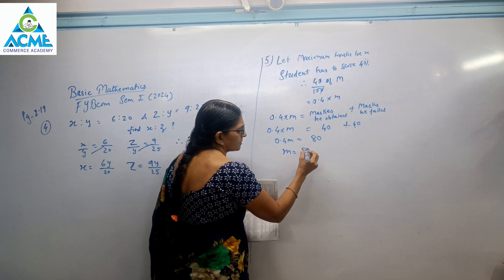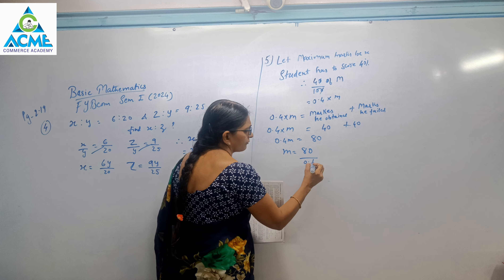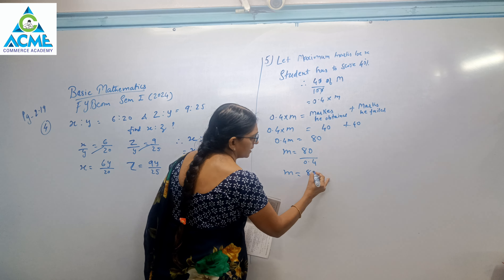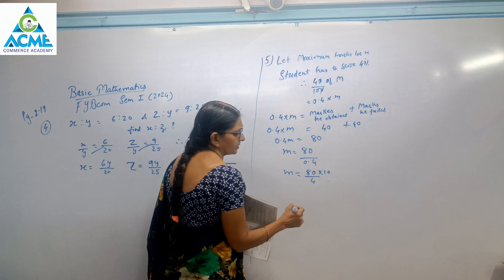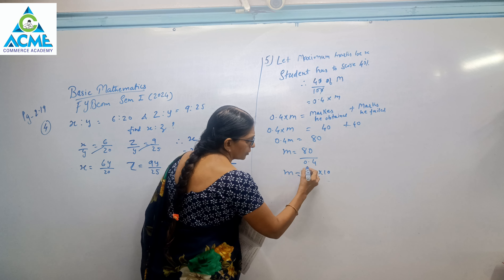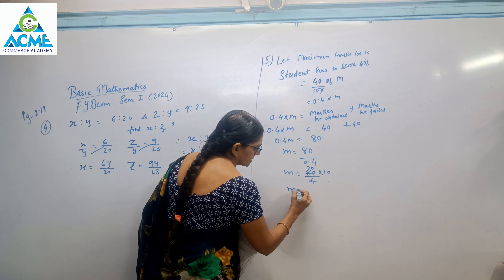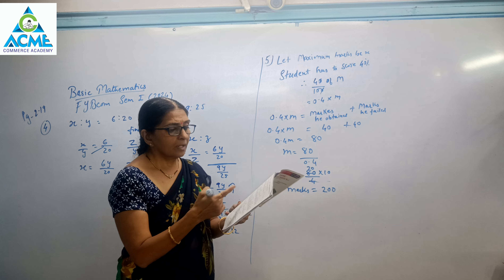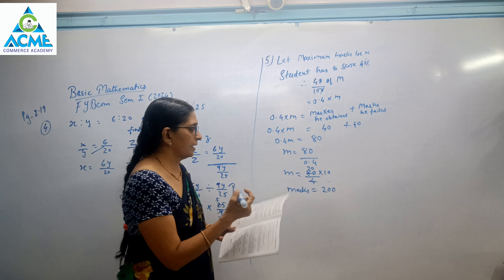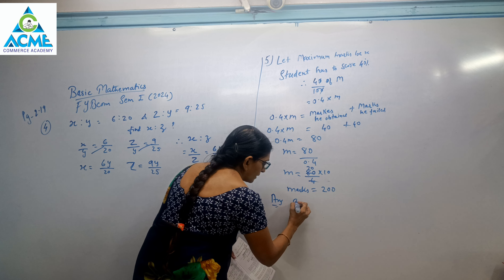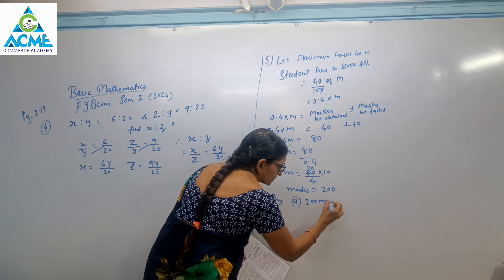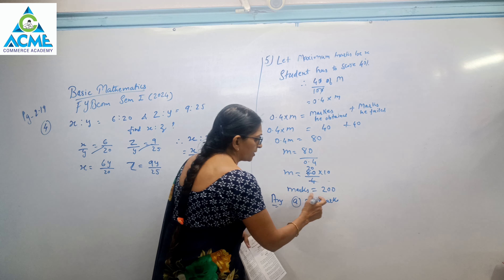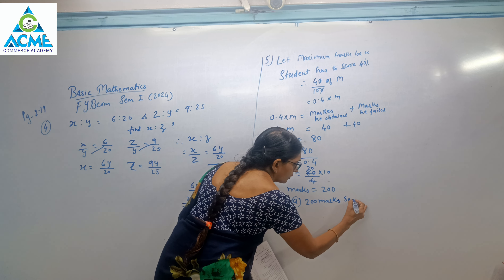Maximum marks equals 80 upon 0.4. You can also calculate it as 80 upon 4 into 10, which gives 200. So your maximum marks is 200. It is option number A. So the answer is A — 200 marks. Maximum marks set for the examination is 200 marks.